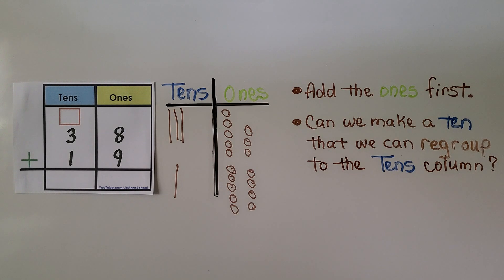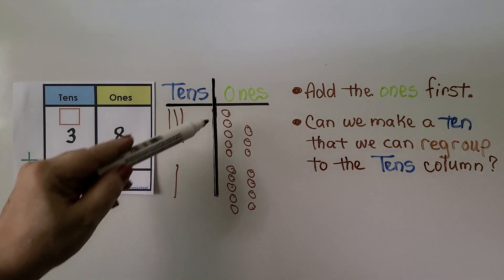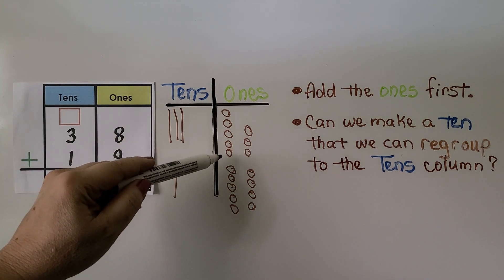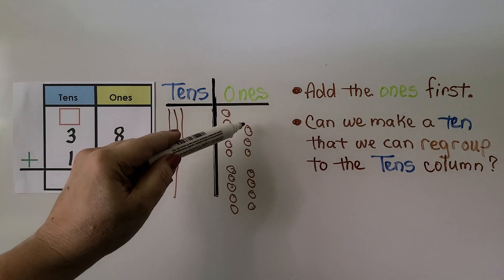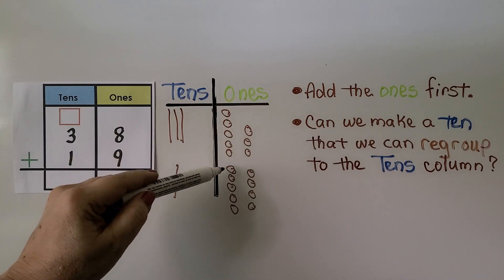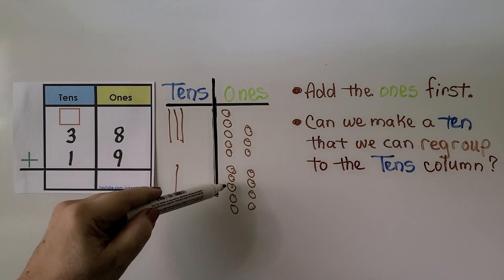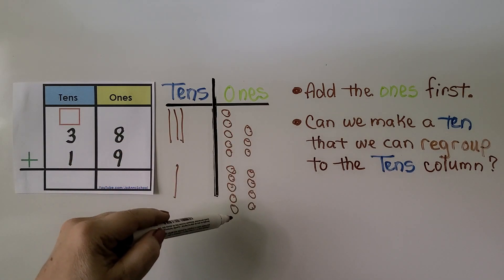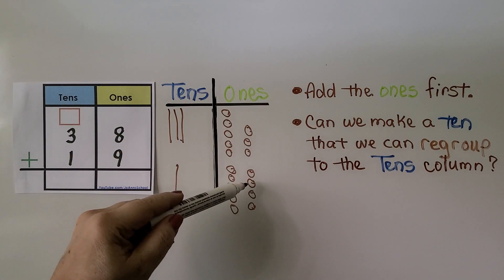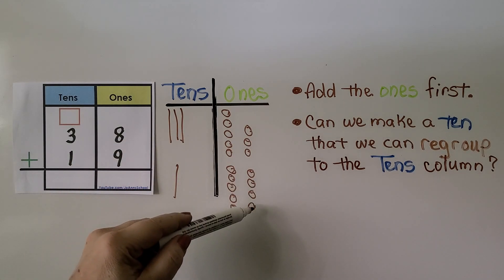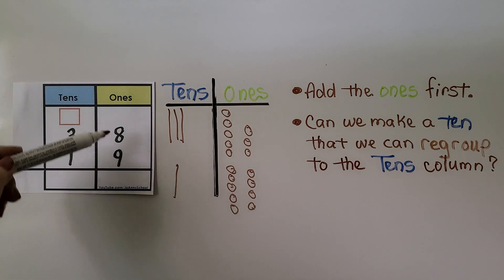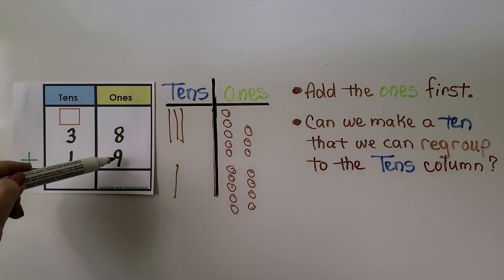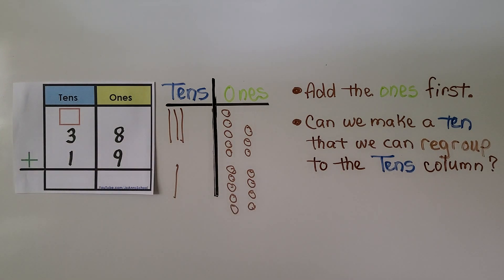We add the ones first. We count: five, six, seven, eight, nine, ten, eleven, twelve, thirteen, fourteen, fifteen, sixteen, seventeen. Eight plus nine is equal to seventeen.